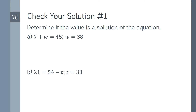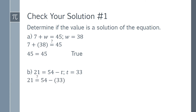To start with Part a, we need to substitute the number 38 in for w. Remember that we write a question mark above the equal sign until we're sure. So on the left hand side we have 7 plus 38, and on the right hand side we have 45. 7 plus 38 equals 45, so this is a solution to the equation. For Part b, we will need to substitute 33 in for t. So on the left hand side we have 21, and on the right hand side we have 54 minus 33. 54 minus 33 is 21, so t equals 33 is a solution to the equation.